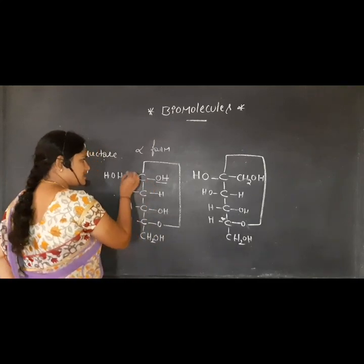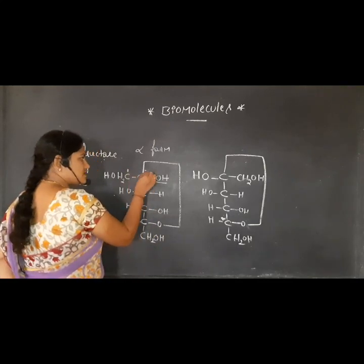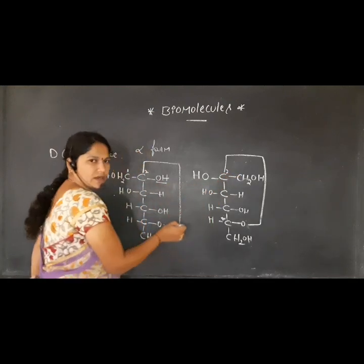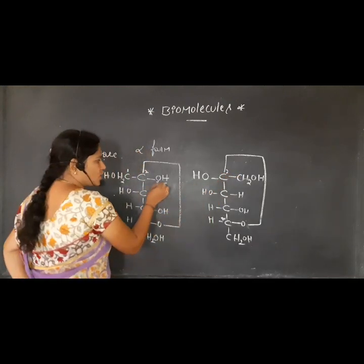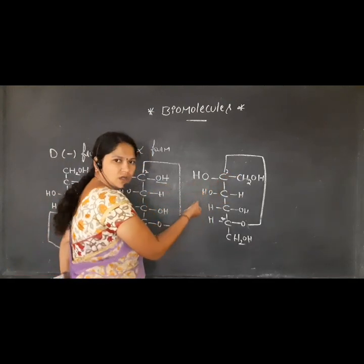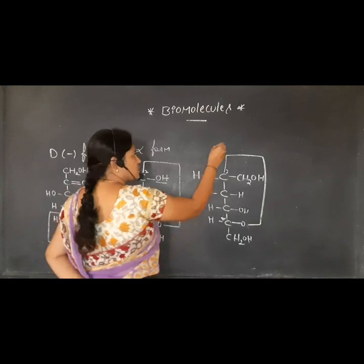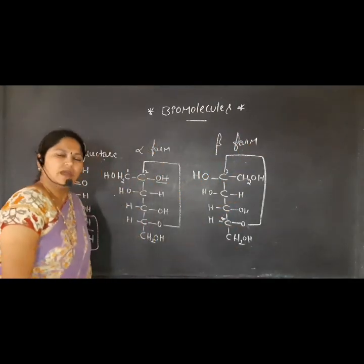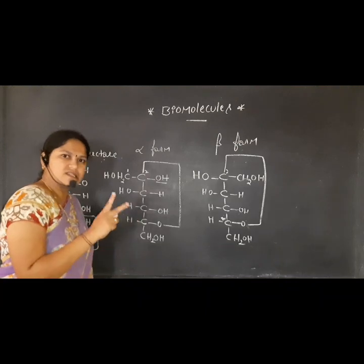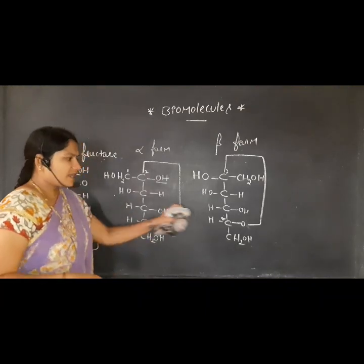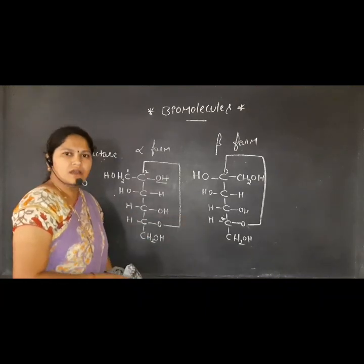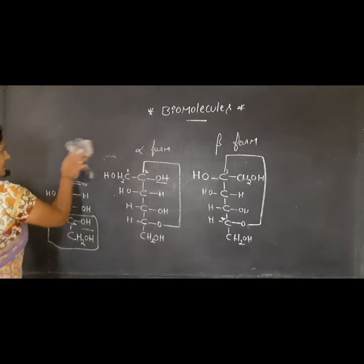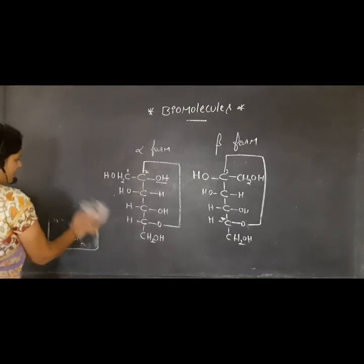Looking at carbon number two: in one form, OH is on the right side, and in the other form, OH is on the left side. The form where OH is on the left side at carbon two is known as the beta form. So fructose exists in two cyclic forms — alpha and beta — and we need to write the Haworth projection structure based on these.